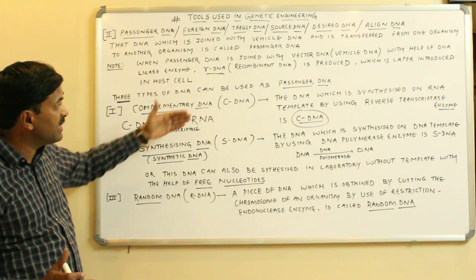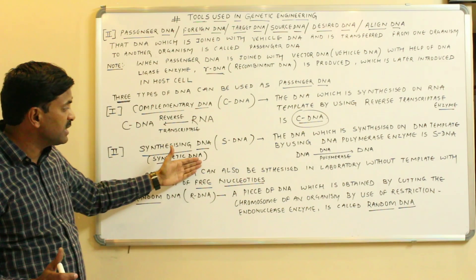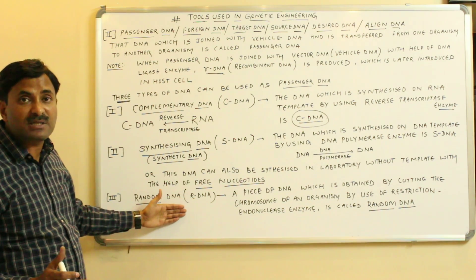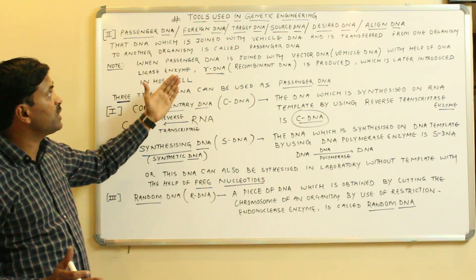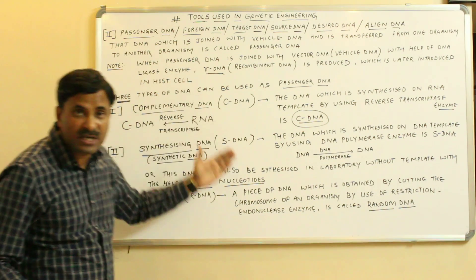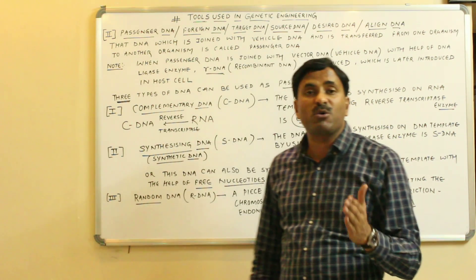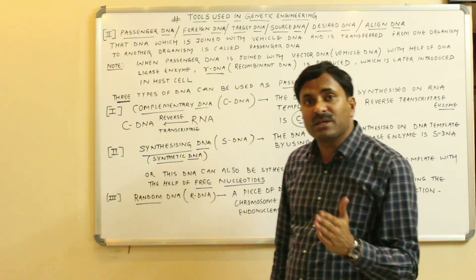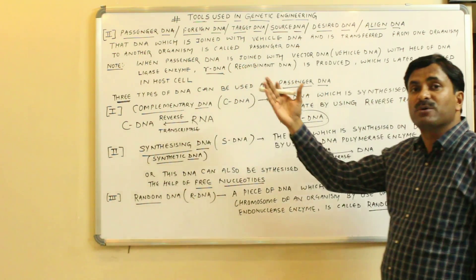So today we have discussed a very important tool known as the desired DNA, foreign DNA, or passenger DNA — which includes cDNA (complementary DNA), sDNA (synthetic DNA), and rDNA (random DNA). We will be coming soon with more videos based on genetic engineering and biotechnology. Thanks a lot, keep watching.